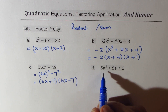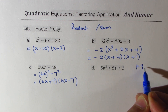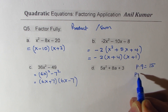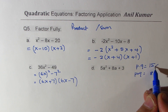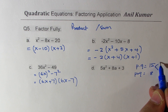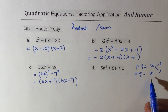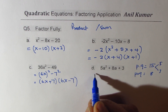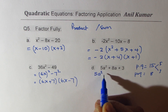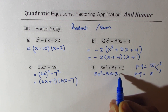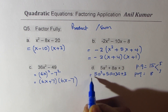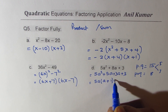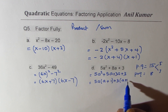Here we have a quadratic where we want the product to be 5 times 3, which is 15, and the sum should be 8. The numbers are 5 and 3. So we split 8a and write this as 5a² + 5a + 3a + 3. Taking 5a common gives (a + 1), and taking 3 common also gives (a + 1).